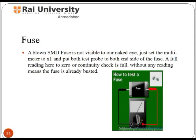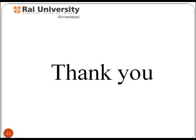To test a fuse, set the multimeter to X1 and put both test probes to both ends of the fuse. A reading of 0 or a continuity check means the fuse is good. Without any reading, the fuse is already busted, as you can see in the slide. Now you can easily test mobile components. Thank you.